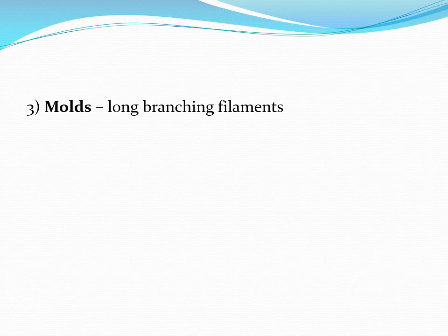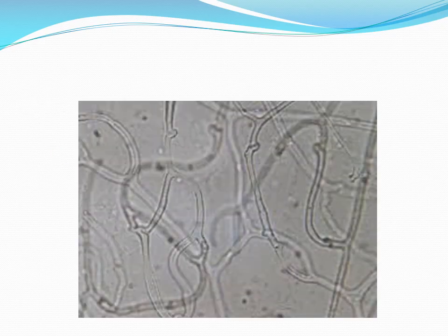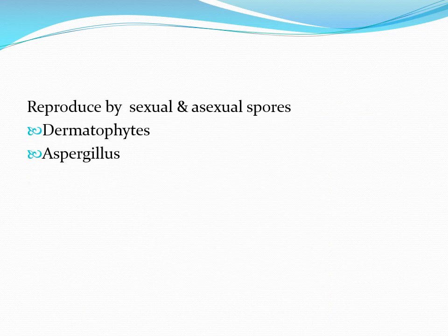Molds are thin, cylinder-filament-like fungi with true hyphae. These hyphae can be septate or non-septate. The thin, long filaments grow continuously and form a tangled mass called mycelium. Molds reproduce by sexual and asexual spores. Most fungi are molds; yeasts are relatively few. Examples of molds include dermatophytes, Aspergillus, Penicillium, and Rhizopus.